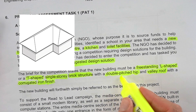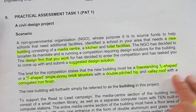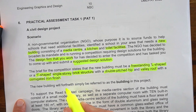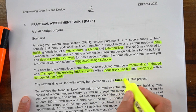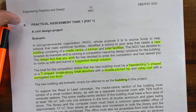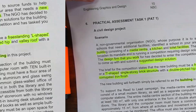You can see what a double pitched hip and valley roof looks like on screen. We'll go into more details later. The new building will henceforth simply be referred to as 'the building.'